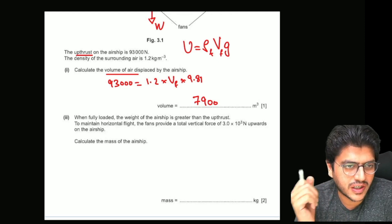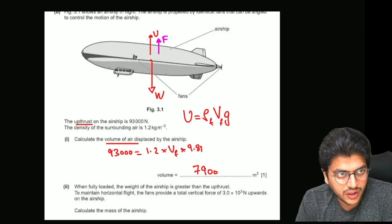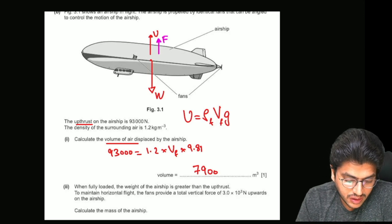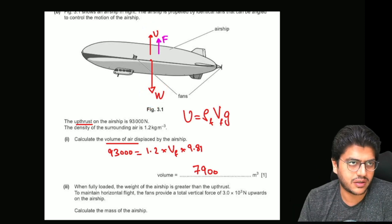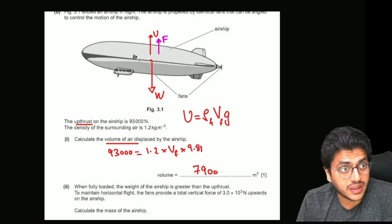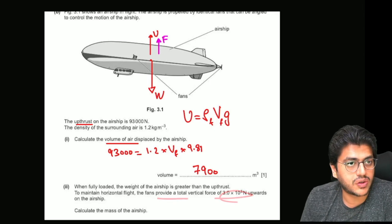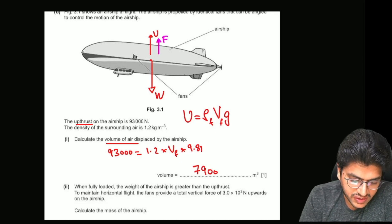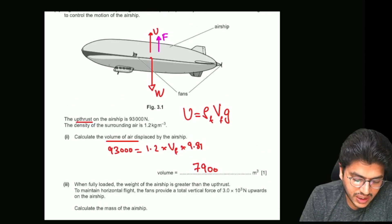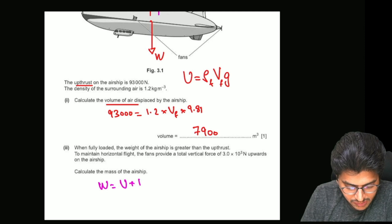When fully loaded, the weight of the airship is greater than the upthrust. So when this ship is fully loaded its weight is more than the upthrust — then why does it not sink? The upthrust is less. That is because the fans provide a force of 3,000 Newtons upwards. So what is the mass of the airship? You first need to figure out the equation that links weight, upthrust, and F, which is given by: weight equals upthrust plus F.